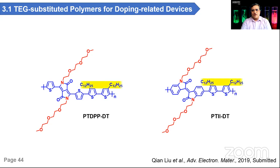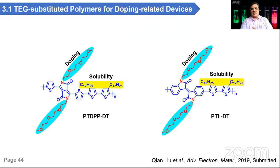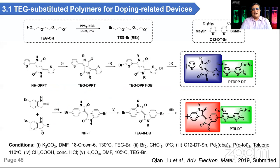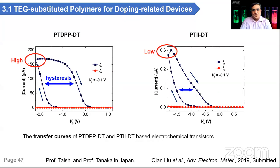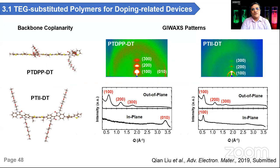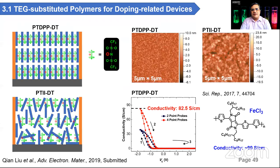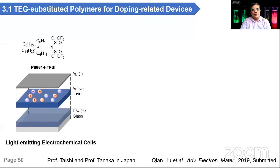We also made other types of polymers useful for electrochemical transistor applications, utilizing ethylene oxide chains as side chains. Because of time, I will skip this and show the last couple of important slides.